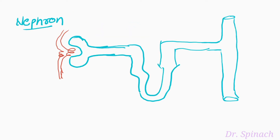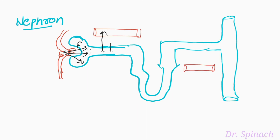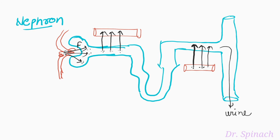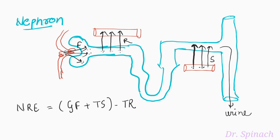The nephron is the fundamental unit of the kidney. There are three major functions of the kidney: glomerular filtration, in which all the non-protein-bound drug is filtered from the glomerulus into the Bowman's capsule; tubular reabsorption, in which the drug is absorbed back into the blood vessel; and tubular secretion, in which the drug present in the blood vessel is secreted into the tubules so that it can be excreted out via urine. Therefore, the net renal excretion equals glomerular filtration plus tubular secretion minus tubular reabsorption, because the drug absorbed back into the blood vessel is systemically available for action.